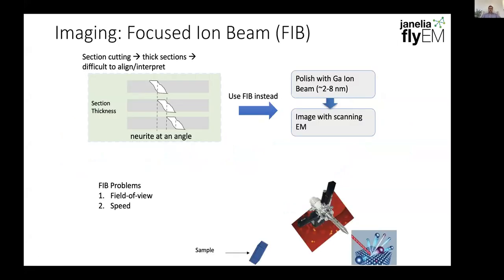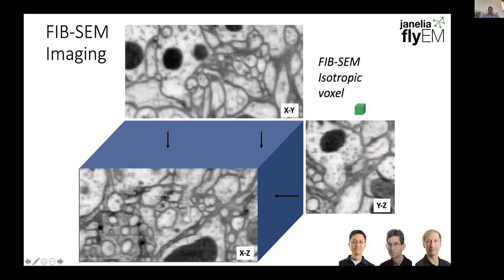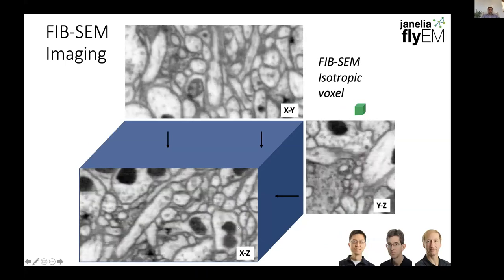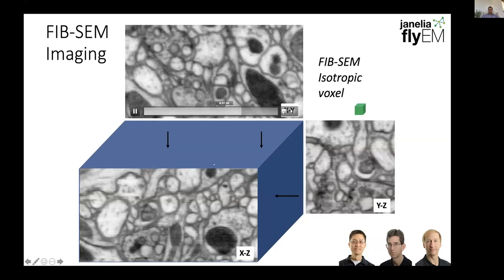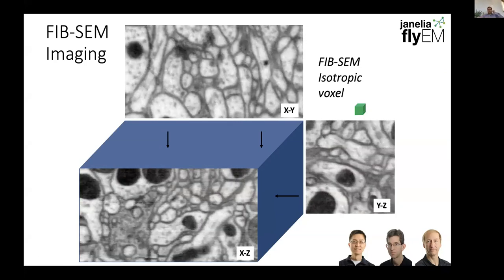The Hess lab at Janelia really pioneered this focused ion beam SEM approach. The basic idea is that classically in electron microscopy, people would section data using something like a diamond knife at 30-40-50 nanometer thick slices. But when the in-plane resolution is substantially smaller, like 8 or 4 nanometers, a focused ion beam can cut and polish the surface just a couple nanometers at a time. We use 8 nanometer cuts and 8 nanometer in-plane resolution, producing very nice isotropic volumes. This shows the quality of image data looking at the XY, XZ, and YZ planes — it looks very good in every orientation, which is particularly advantageous for image segmentation.